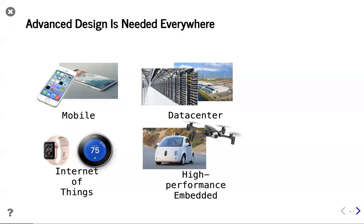As we're all well aware, there are many types of electronics in the world these days. Maybe 10, 20, 30 years ago there were far fewer of them — less diversity, fewer chips. But now it's just a plethora everywhere. It's not just smartphones in our pockets or computers in a data center. It's the internet of things, high performance embedded systems all around us. The number of chips in a car keeps going up and up, and as a result there's tons of electronic design going on all around us.